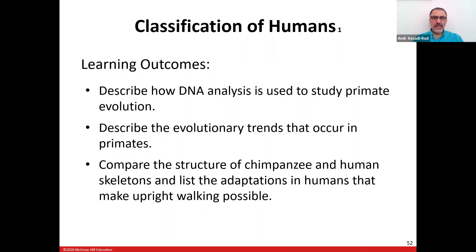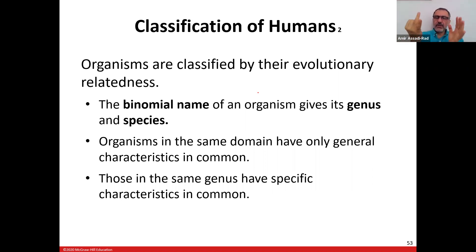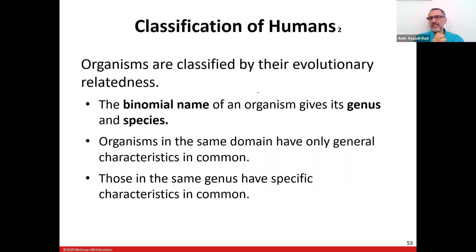Organisms are classified by their evolutionary relatedness. The taxonomic hierarchy — remembered by the mnemonic 'King Paul Came Over For Good Sex' — is: Kingdom, Phylum, Class, Order, Family, Genus, Species. Before Kingdom is Domain. Nowadays, classification is increasingly based on DNA sequences, but homology is still used.